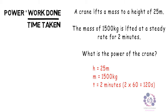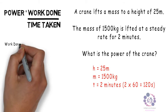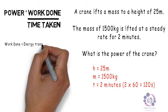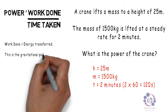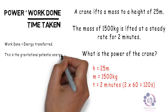Work done equals energy transferred. This is the gravitational potential energy in this case. So remember energy equals mgh for gravitational potential energy.